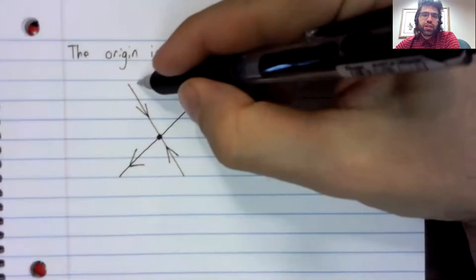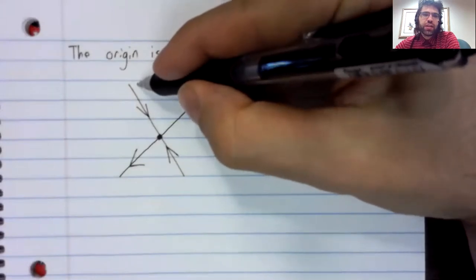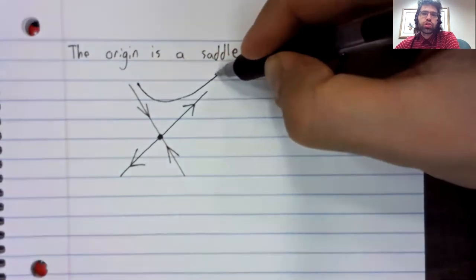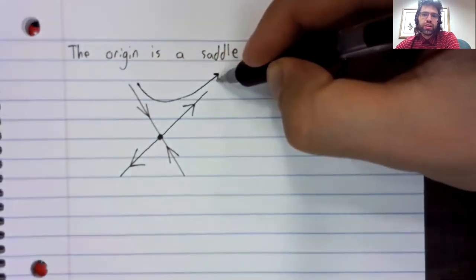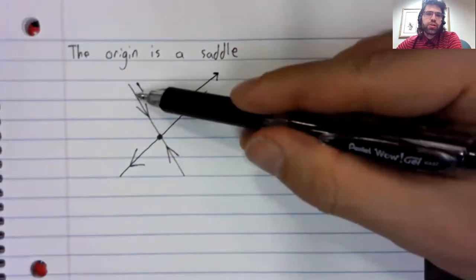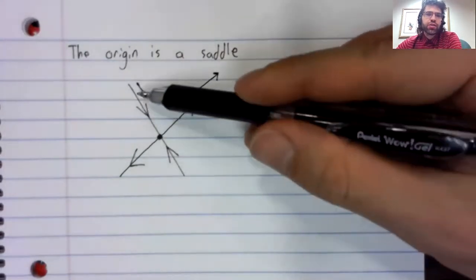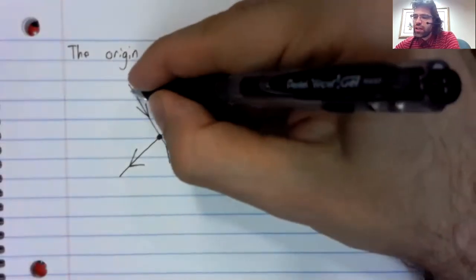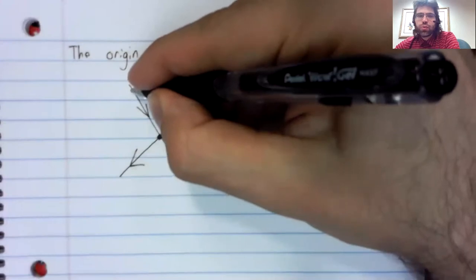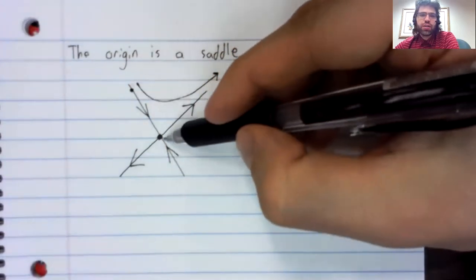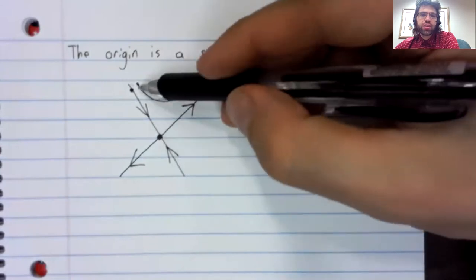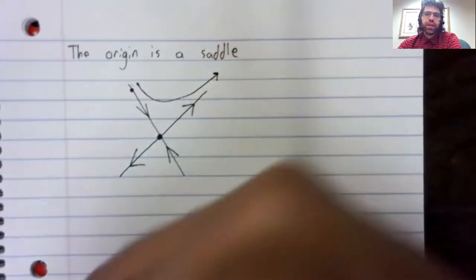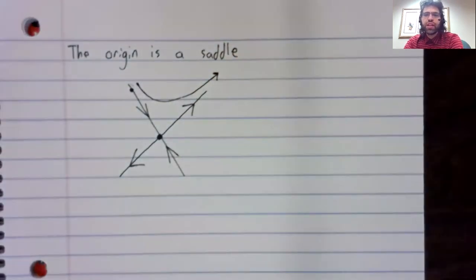Most trajectories in the plane do not approach the origin. But there is one line of trajectories that does. That is to say, any initial value on this eigenvector will approach the origin as time goes to infinity.